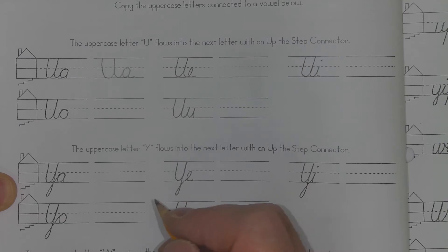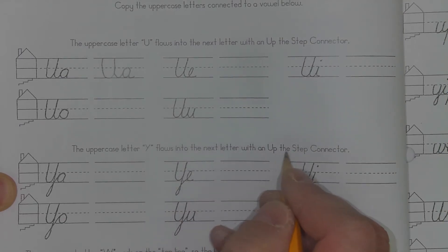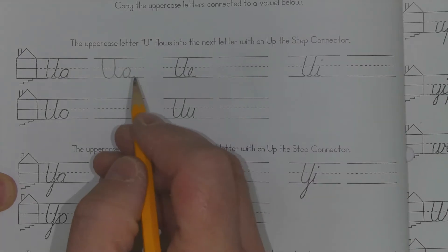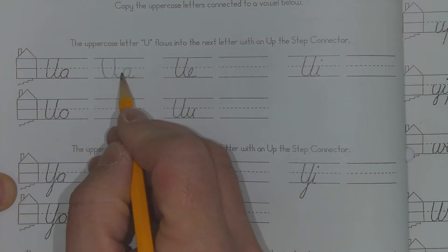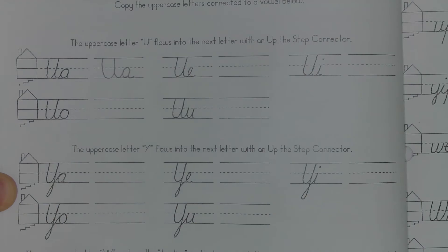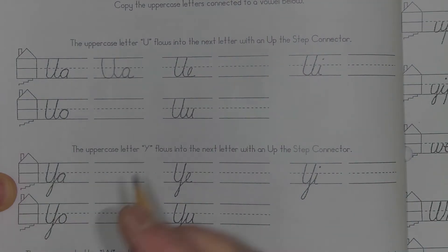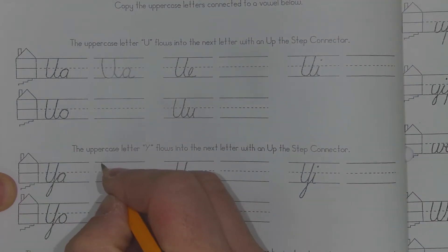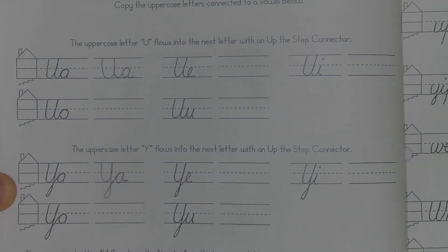Down in the next column, the Y flows into the next letter with an up-the-step connector, and I guess that's what this one was, an up-the-step connector into a C-stroke. And so we'll just make our U-turn, and instead of going down and stopping, we'll go all the way down and then up into our letter A using that C-stroke.